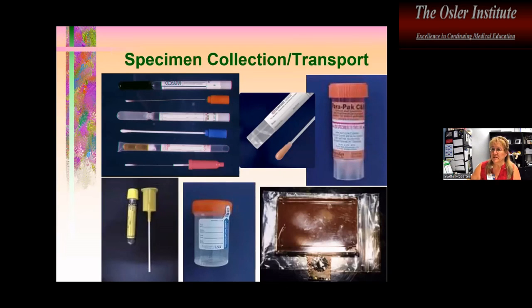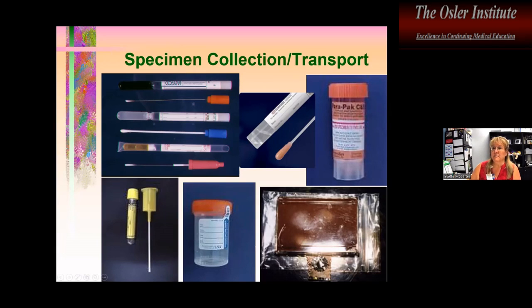There are many options for specimen collection and transport devices. Swabs are very popular mostly because they're convenient, but not particularly ideal since they collect a small amount of specimen. The flocked swab — often referred to as the e-swab — is perhaps the best swab, because it releases organisms captured in the swab, unlike the classic wound swab. We also need adequate preservation of specimens; for stool and urine, having preservatives is very helpful.